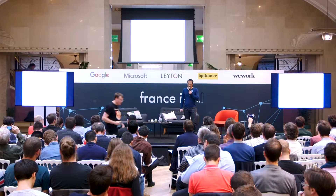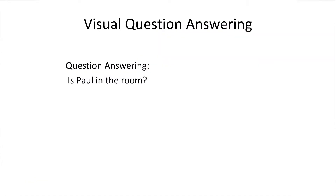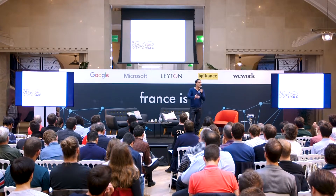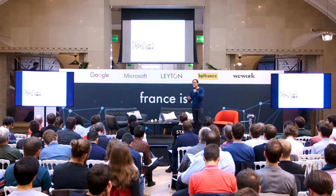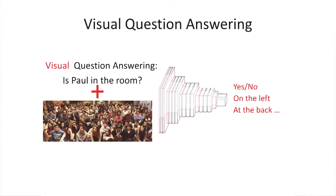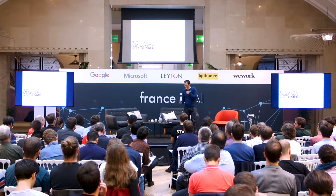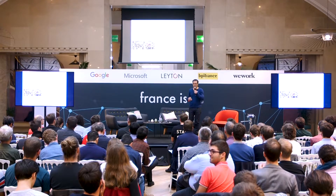Visual question answering starts with a question answering problem, like 'Is Paul in the room?' When you add the visual component, you include an image and the question relates to something inside that image. We expect machines to give the right answer — something like yes, no, on the left, or at the back. This requires putting together different deep models in a multimodal context.